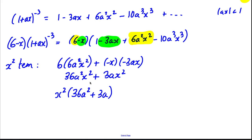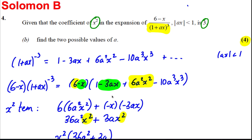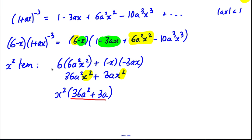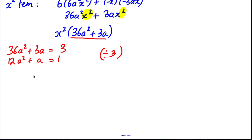Now we know the coefficient of x squared is 3, it tells us in the question. So we know therefore that 36A squared plus 3A must equal 3. Dividing everything by 3 we can say that 12A squared plus A must equal 1. Subtracting one from both sides, 12A squared plus A subtract 1 must be equal to 0.